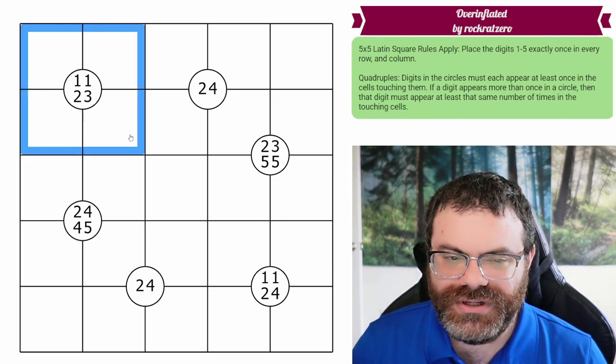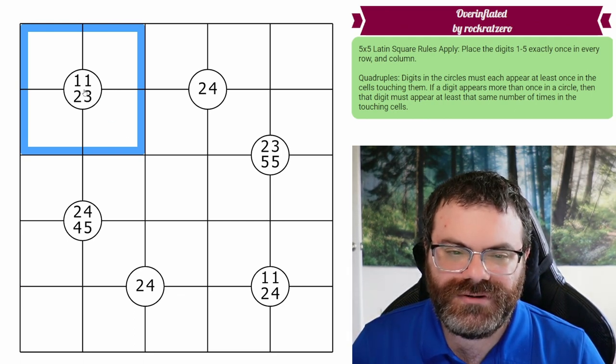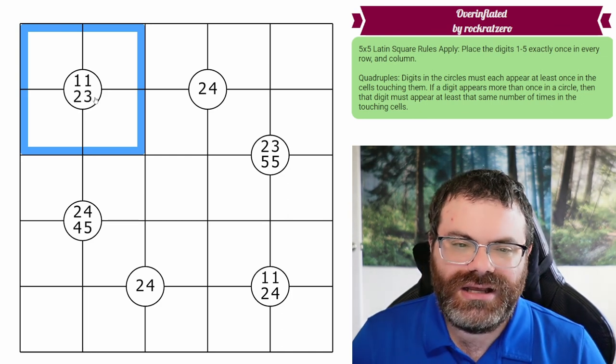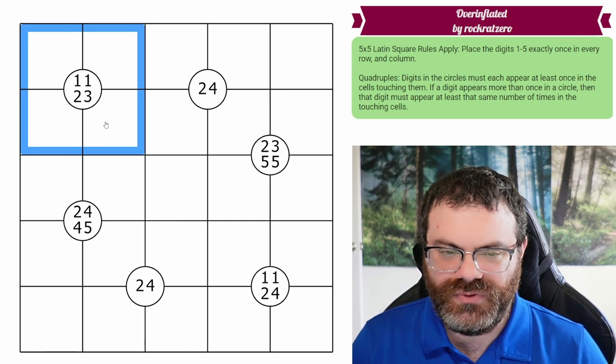And we also have quadruples in the grid. So quadruples, they always touch four cells. They're at the corner of four cells.